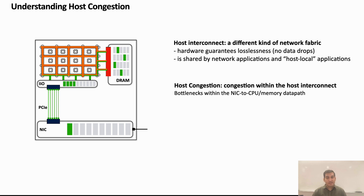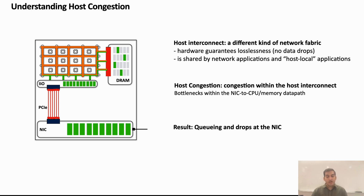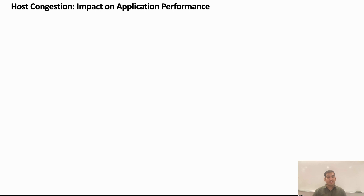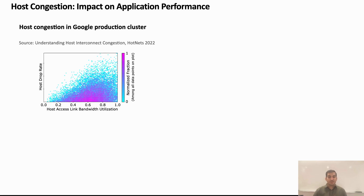Like most real-world fabrics, host interconnect is also oversubscribed. For instance, traffic from host local applications and network applications can contend for memory interconnect bandwidth, leading to congestion at the memory controller. Since the host interconnect is lossless, this congestion results in back pressure all the way back to the NIC, resulting in packets being queued and eventually getting dropped at the NIC. Host congestion can incur significant impact on network application performance. This is precisely what was shown to happen in Google's production cluster in a recent HotNets paper. Specifically, even with state-of-the-art congestion control protocol and state-of-the-art user-space network stack, servers in Google production clusters observe high queuing delays and packet drop rates, even when access link bandwidth is far from saturation.